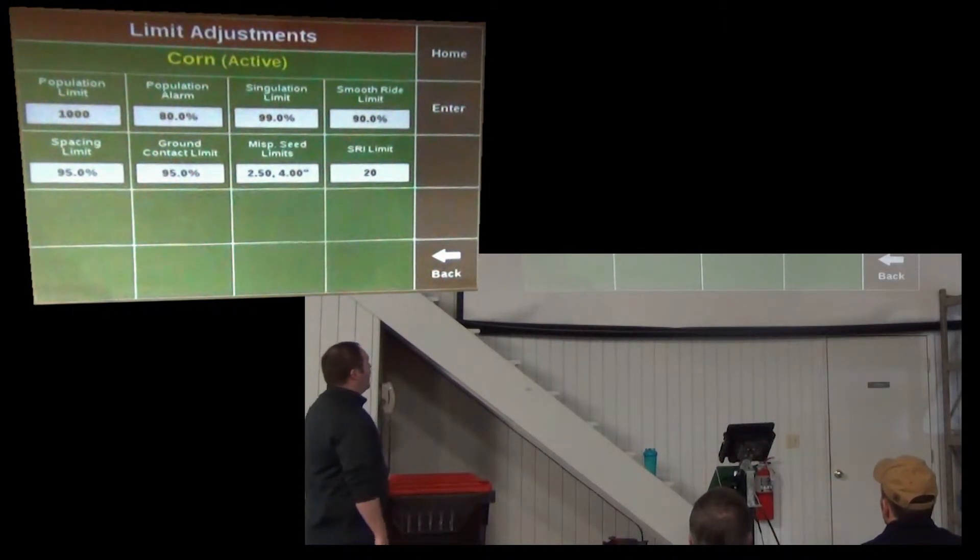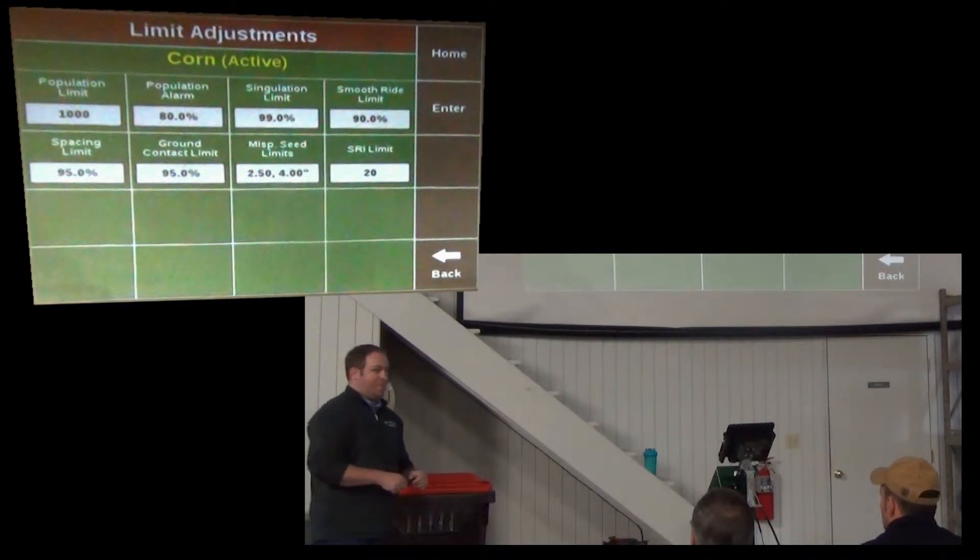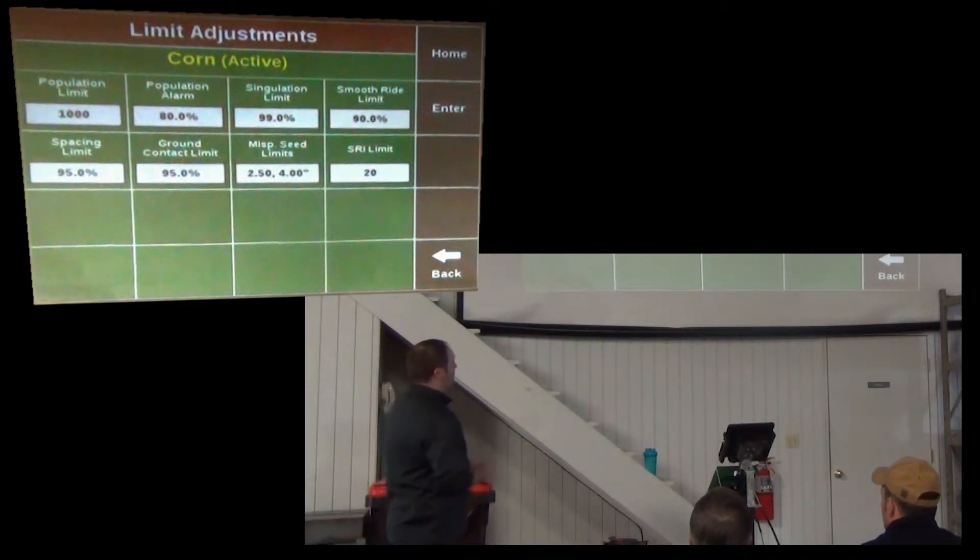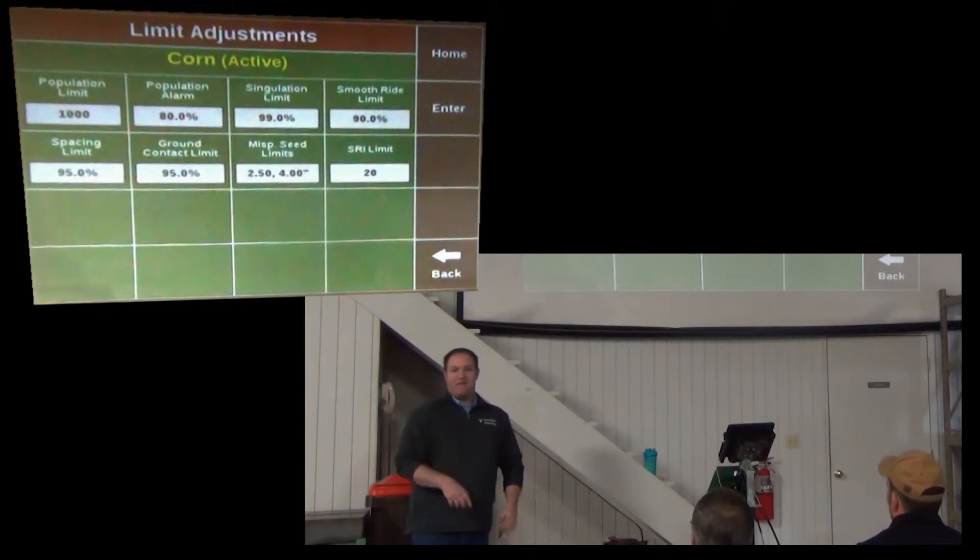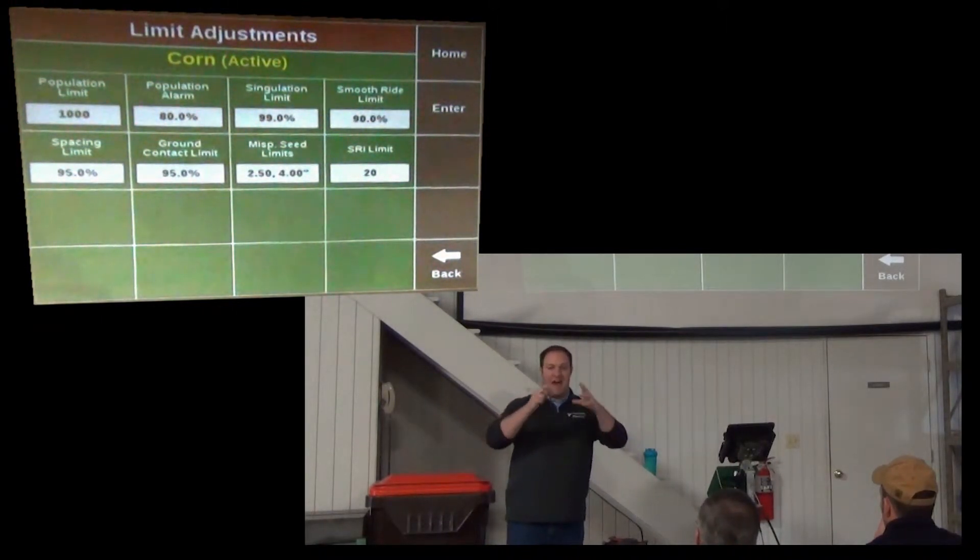Now, all the other ones, except the misplaced seed limits, is a setting for when the boxes on the home screen are going to turn yellow. So population limit, if that's at 1,000 like it is right now, if you say I'm going to plant 34,000, if you have one row below 33 or above 35, the low or the high box will turn yellow. If your planter average is 1,000 higher or lower, then the entire large population box turns yellow.